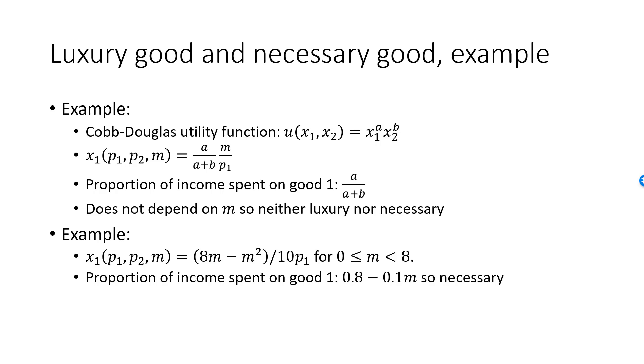Since the proportion of income spent on good one decreases with M, the proportion of income spent on good two must increase with M, and good two must be a luxury good. In our example, the proportion spent on good two is 1 minus the proportion spent on good one, which is 0.2 plus 0.1M, and we see that good two is indeed a luxury good.